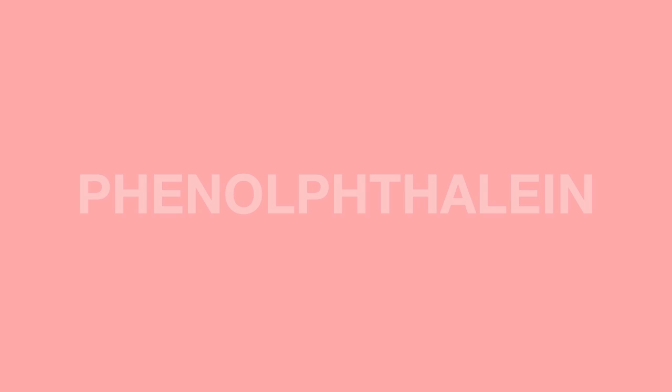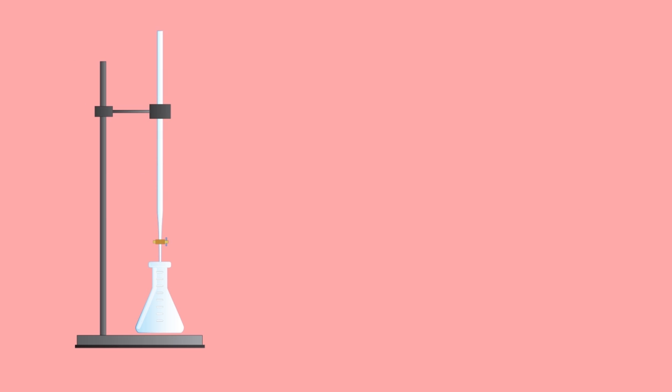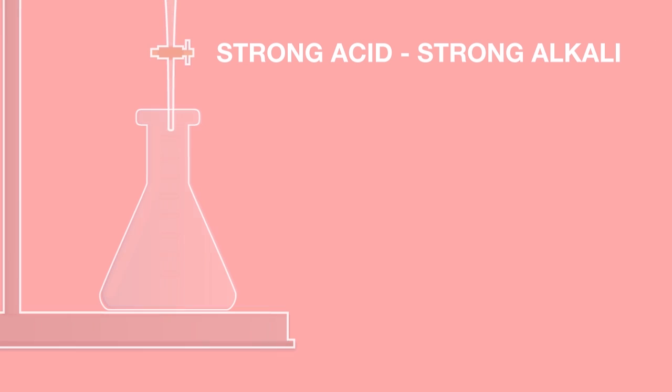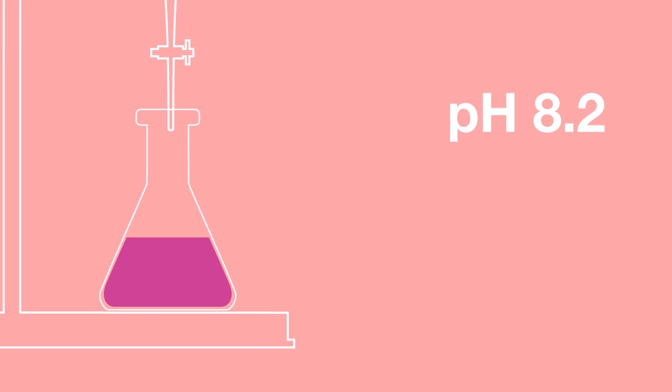Phenolphthalein is an indicator commonly used to determine the endpoint of a strong acid-strong alkali or weak acid-strong alkali titration. It goes from colorless to fuchsia pink at a pH of 8.2.